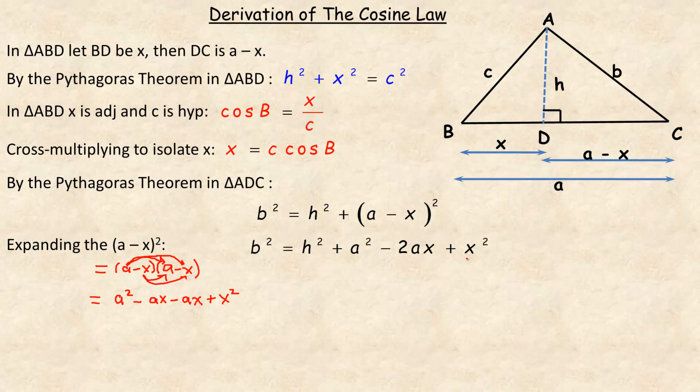And negative X times negative X is X squared. So that's the X squared at the end. A squared at the beginning. And these two negative AX's or negative 1AX's add to negative 2AX. So that's where that expansion comes from.